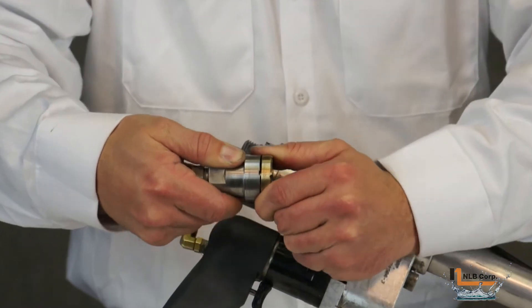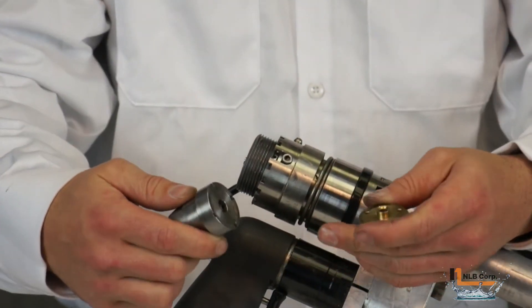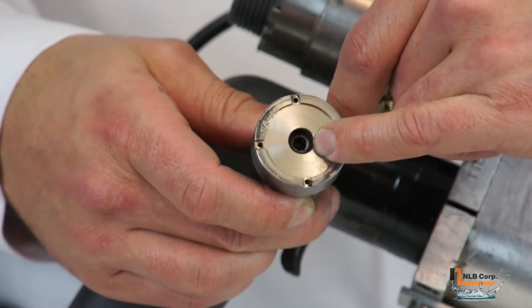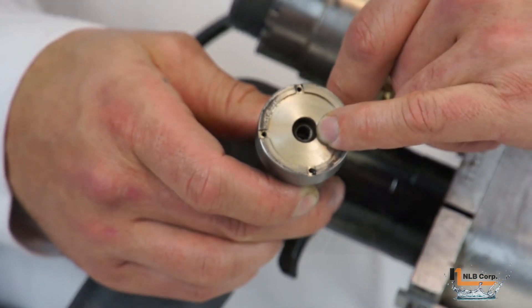Now, grasp the high pressure seal housing in one hand and the backup ring in the other and pull the two apart. With the backup ring removed, you can now see the high pressure seal inside the housing.